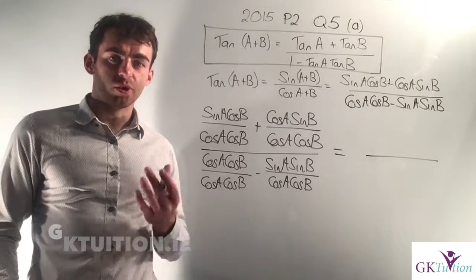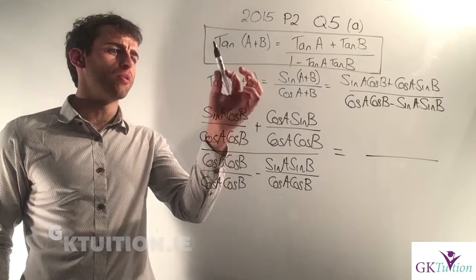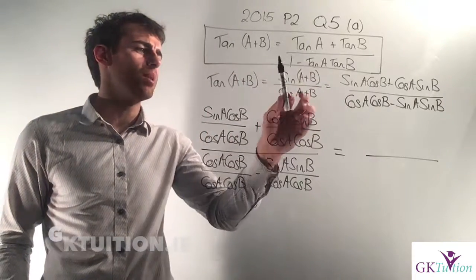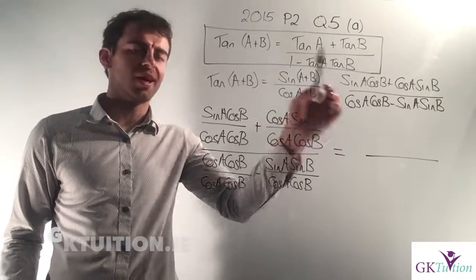In the first part of this question we're given one of our proofs. We need to prove that tan(A+B) equals tan A plus tan B over 1 minus tan A tan B.